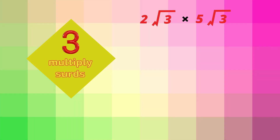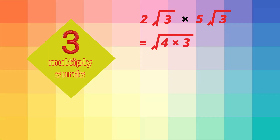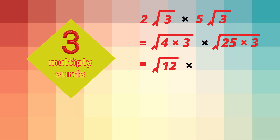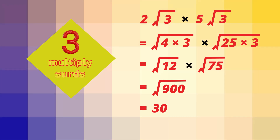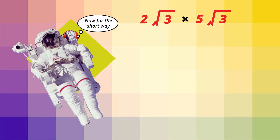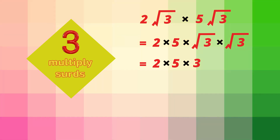Now let's multiply surds. What is 2 root 3 multiplied by 5 root 3? We'll do this the long way first: 2 root 3 becomes the square root of 4 times 3, which is root 12. And 5 root 3 becomes the square root of 25 times 3, which is root 75. Then root 12 times root 75 is root 900. The square root of 900 is the exact number 30. But we can do this a much shorter way: multiply the 2 and the 5, then multiply root 3 times root 3, which is root 9 or the exact number 3. The same answer of 30.